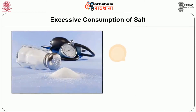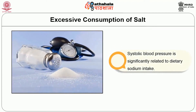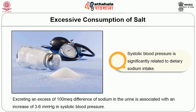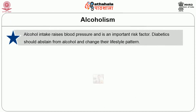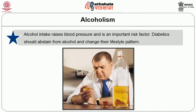Excessive consumption of salt: systolic blood pressure is significantly related to dietary sodium intake. Excreting an excess of 100 milliequivalents of sodium in the urine is associated with an increase of 3 to 6 mmHg in systolic blood pressure. Alcohol intake raises blood pressure and is an important risk factor. Diabetics should abstain from alcohol and change their lifestyle pattern.